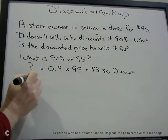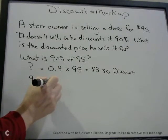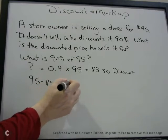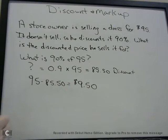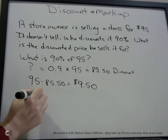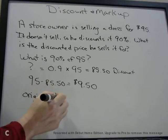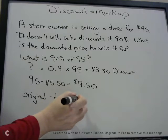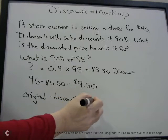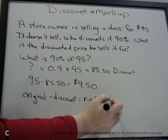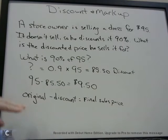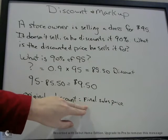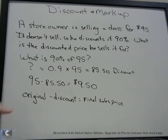The final price is the original minus the discount. So original minus the discount equals the final sales price. When we did a markup, we took the original plus the markup to get the final sales price. Here we're discounting it — making it cheaper — so original minus the discount equals the final sales price.